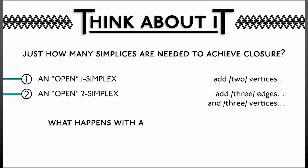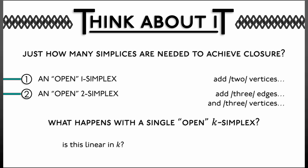So for a one-simplex we needed to add two things, and for a two-simplex we needed to add six things. What happens in general for a single k-simplex? How much do we need to add to take its closure? I think that relates to something we discussed recently. Is it a linear function of k? Quadratic? Polynomial? Exponential? Try to figure this out and then try an inductive proof — that's going to be a good exercise.